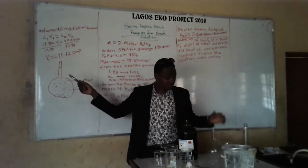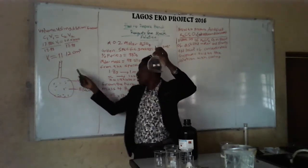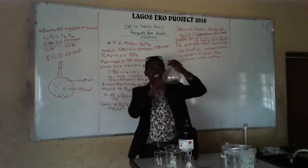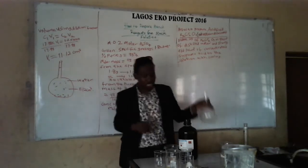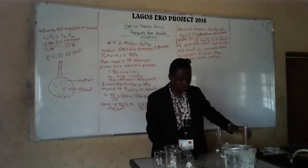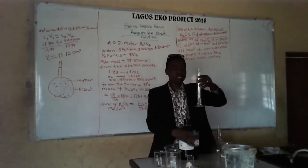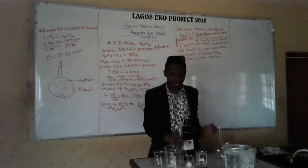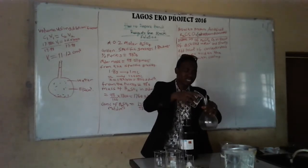Now, what is the implication? To prepare this standard solution, I have to measure 11.12 cm³ from the stock solution. An important safety note: you cannot add water to acid — you have to add acid to water. So first, add a little water to the volumetric flask.